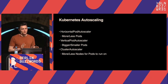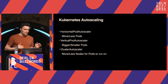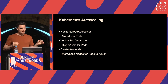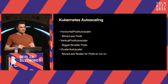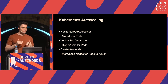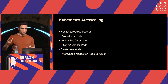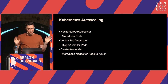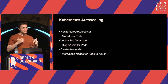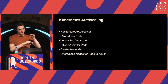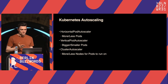The Vertical Pod Autoscaler solves the same problem in the opposite way. If you have a very overutilized application and don't have enough resources, instead of adding more pods, the VPA will take your existing pods and give more resources to each of them — expanding vertically. Similarly, if you have too many resources per pod, it will shrink your pods and give less resources to each.